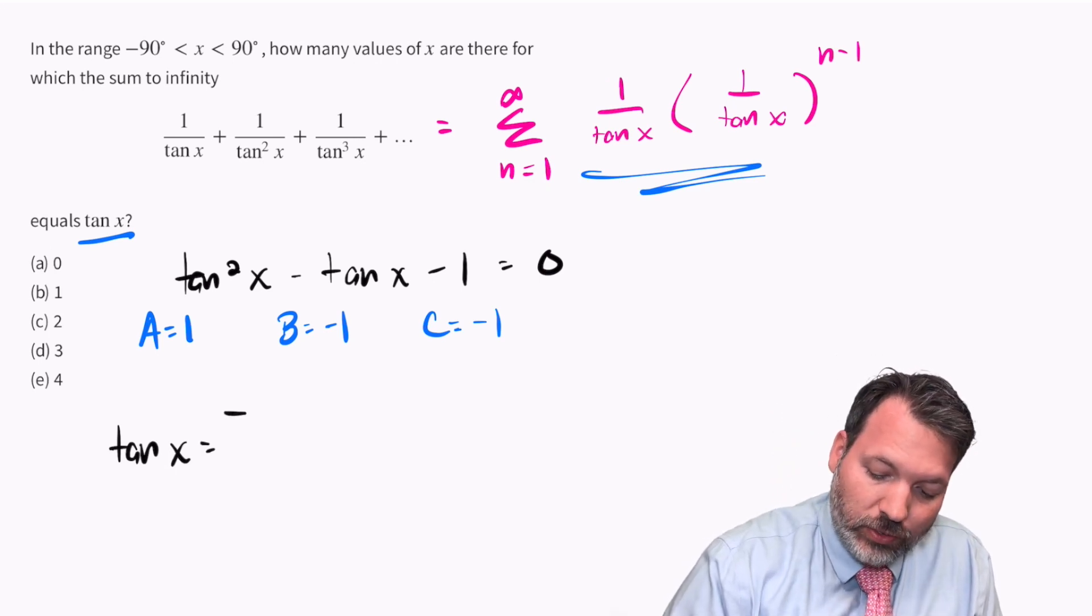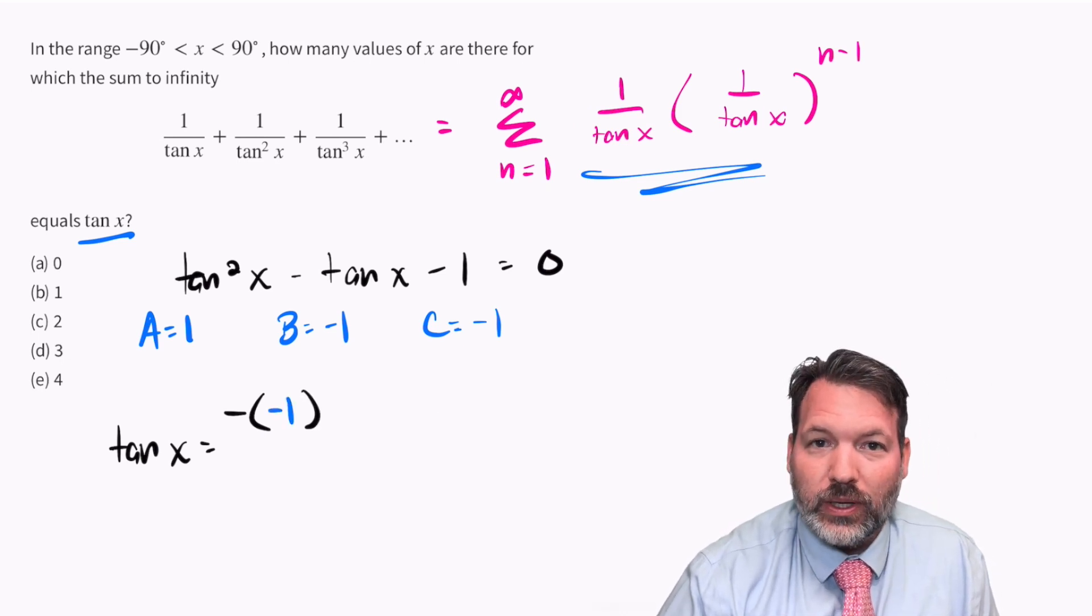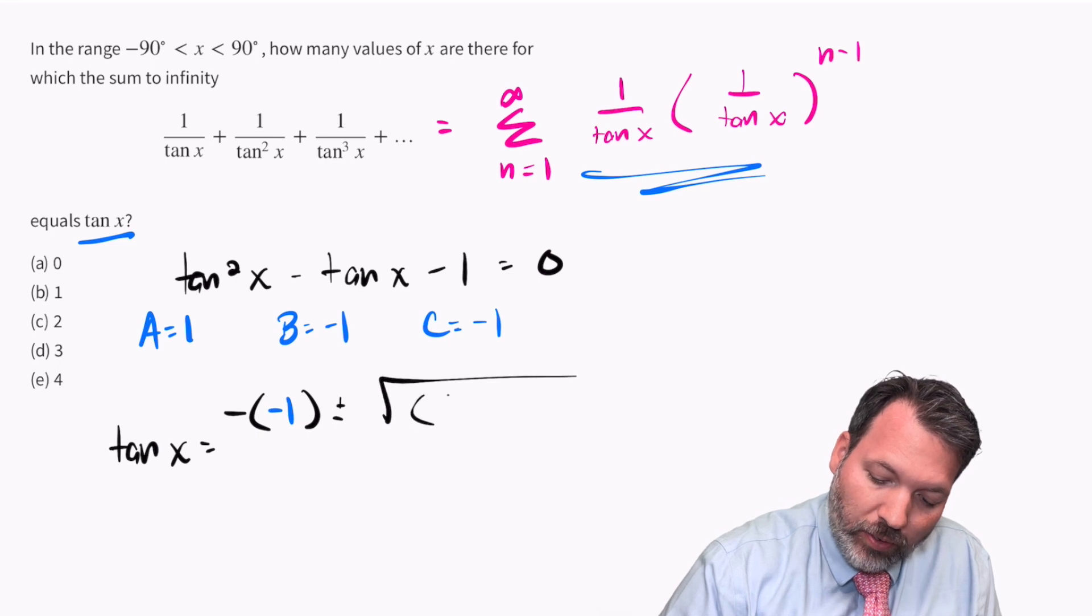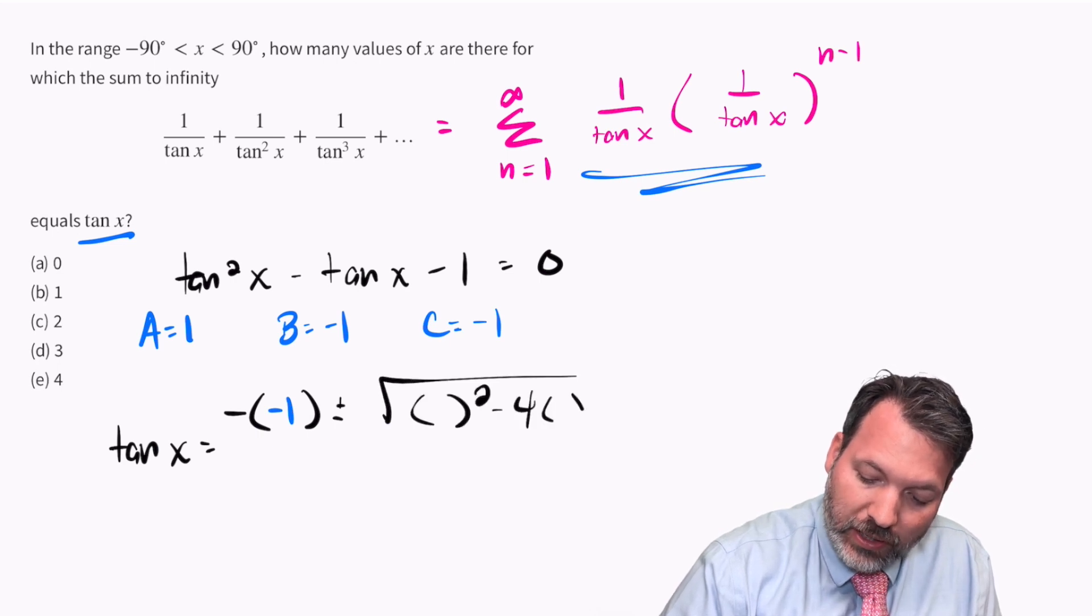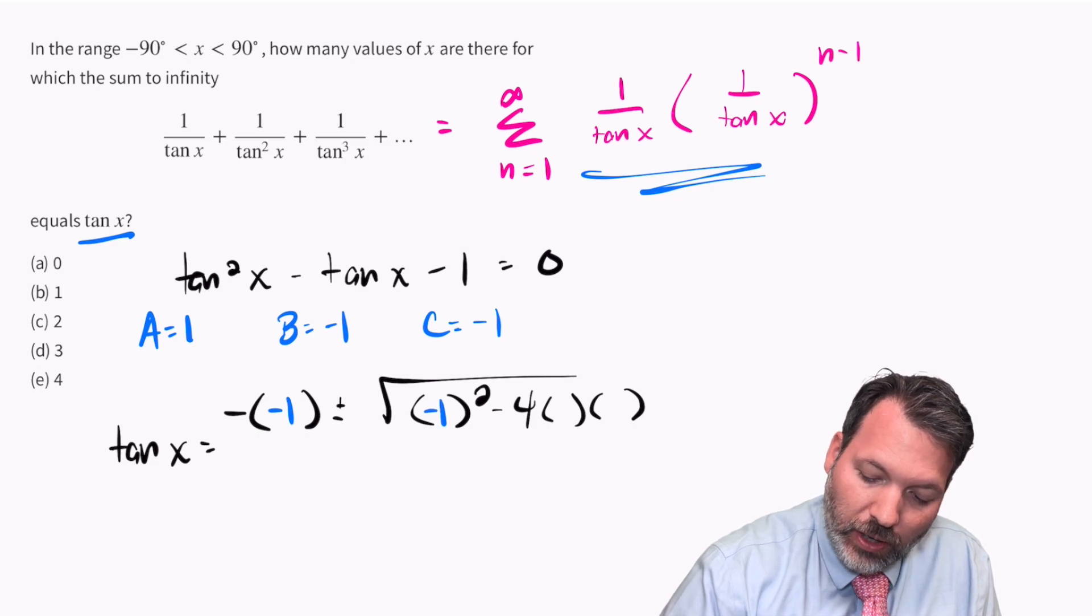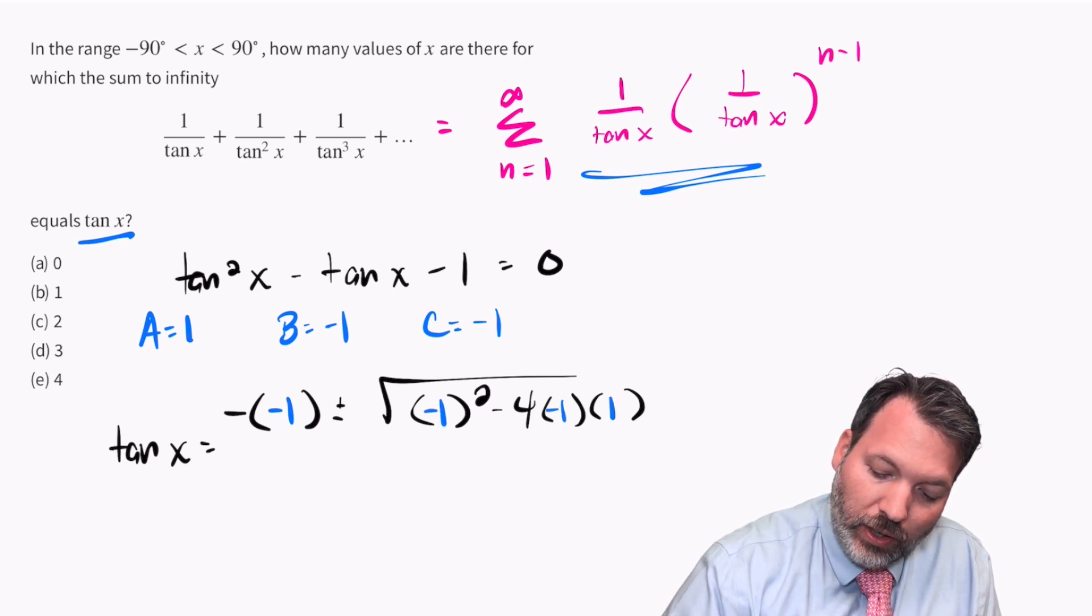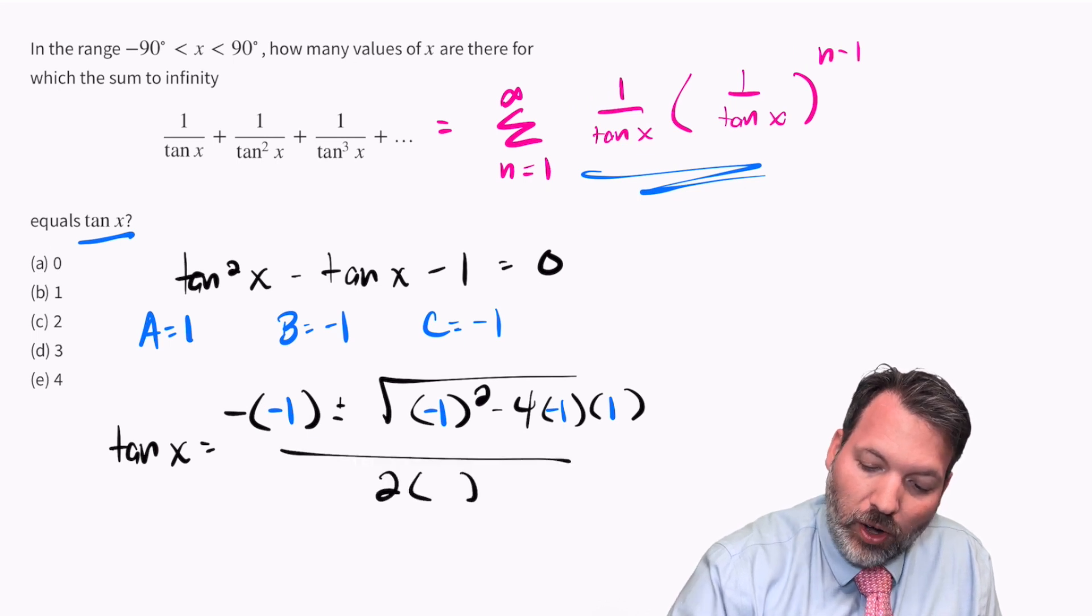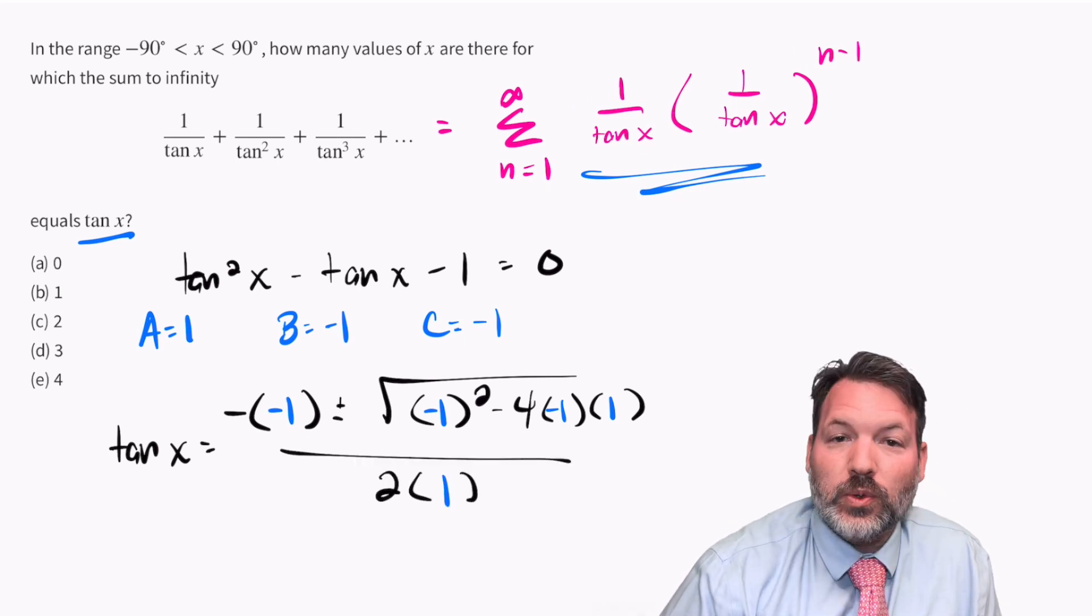X is equal to negative b, you know the song, right? Plus or minus the square root of b squared minus 4ac. So in our case, that's negative one squared minus 4 times negative 1 times 1, all over 2a. So all divided by 2 times 1.